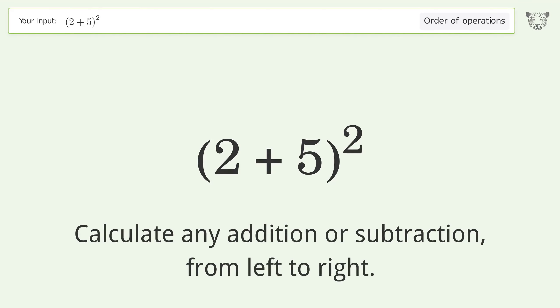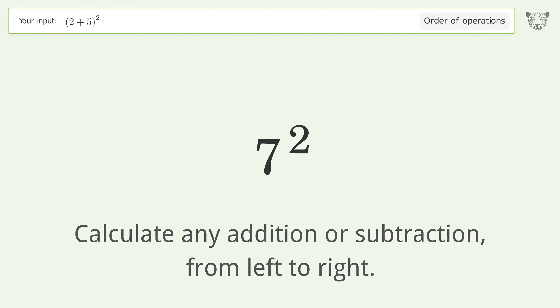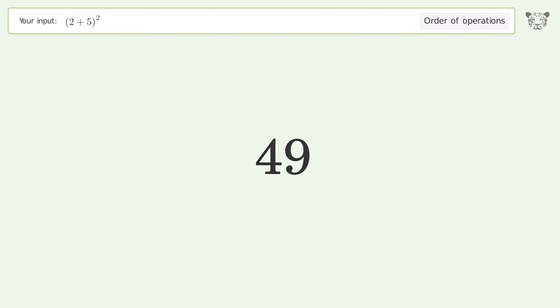First, calculate any addition or subtraction from left to right: 2 plus 5 equals 7. Then simplify exponents and square roots: 7 to the power of 2 equals 49. And so the final result is 49.